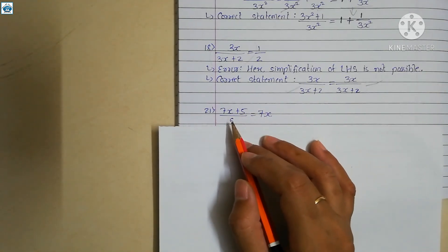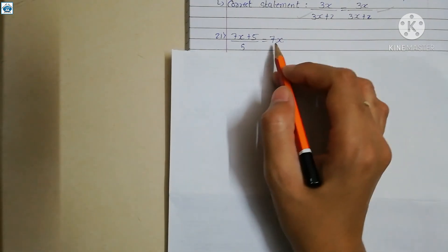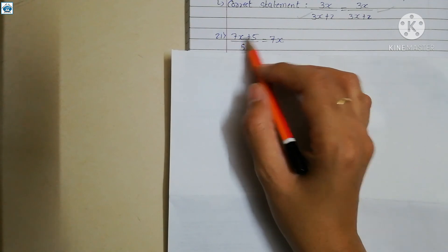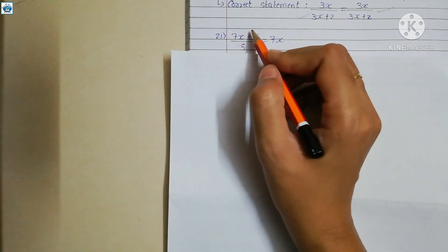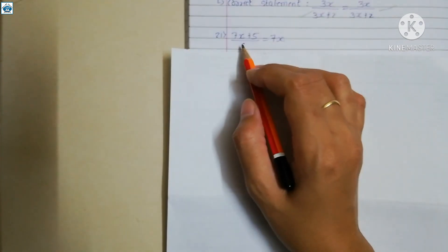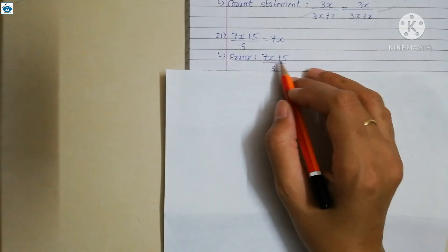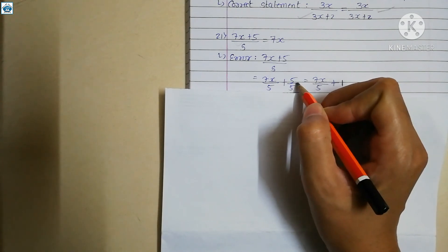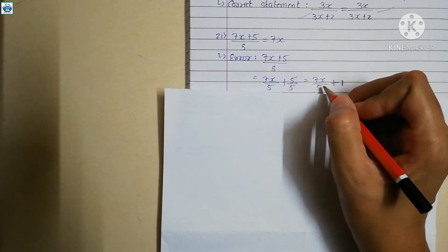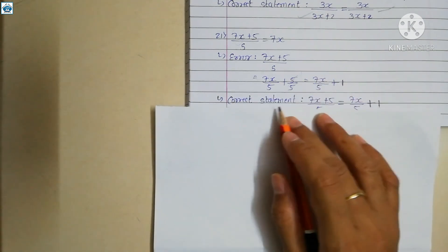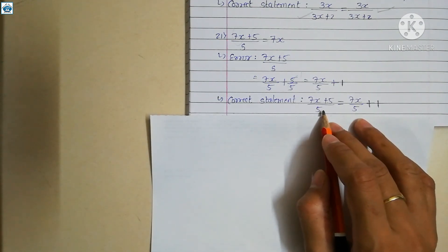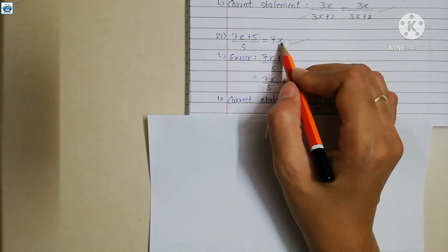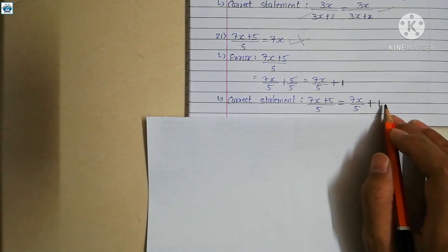Statement 21, the last one, is 7x plus 15 upon 5 equals 7x. The denominator 5 applies to both terms individually, so 7x upon 5 plus 15 upon 5. Since 15 upon 5 equals 3, not 1, the answer is 7x upon 5 plus 3. The correct statement is: 7x plus 15 upon 5 equals 7x upon 5 plus 3, not just 7x.